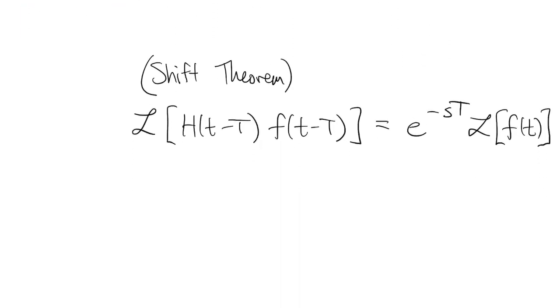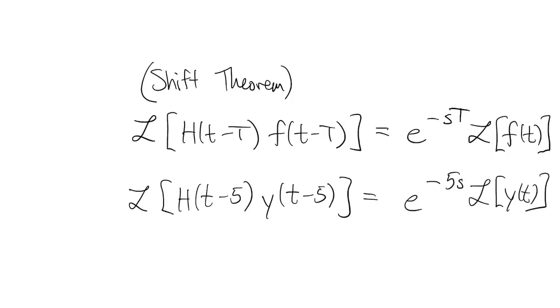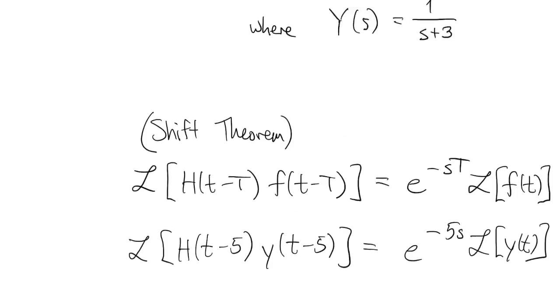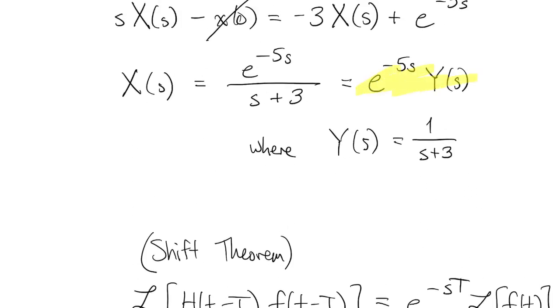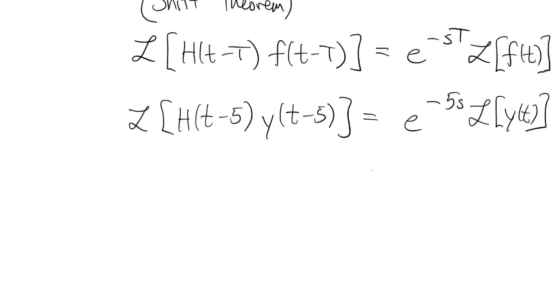Here's the shift theorem again. I'm going to replace capital T with 5 and f with y. Now, where did I come up with capital T equaling 5? It comes from the exponential that's in x of s.